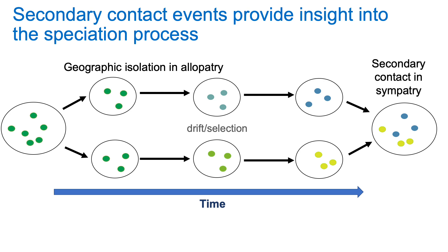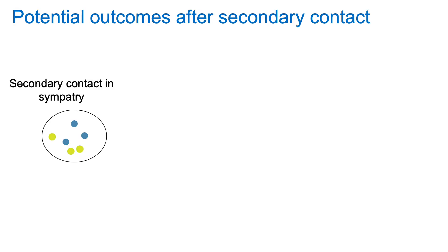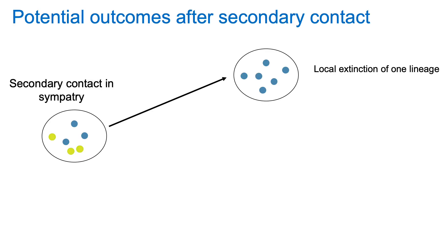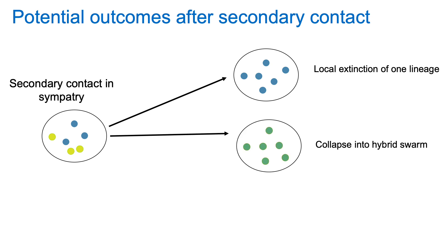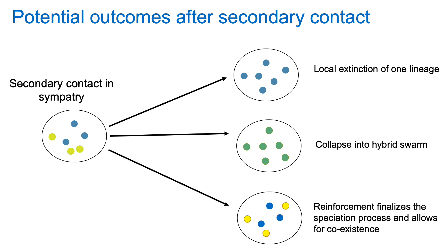There are multiple different outcomes that we can have at the time of secondary contact. For example, we could potentially have local extinction of one lineage or the other due to competitive exclusion. We could have collapse into a hybrid swarm if the lineages interbreed upon secondary contact. Or we could have reinforcement acting to finalize the speciation process and allowing both new species to coexist. Today I'll be focusing on this last option.